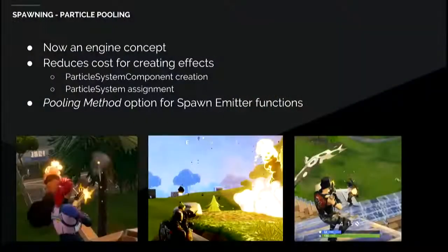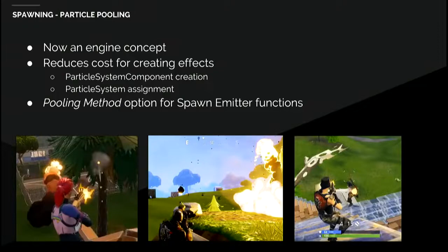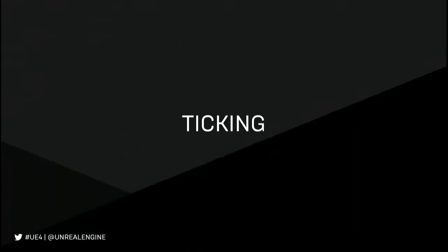One thing in particular that we did was add the concept of particle pooling. One of the most common things we spawn in a game with lots of combat is particle effects — whether it's hit markers on someone, particles from things being spawned, or explosions. By pooling them, we basically keep sets of components around that we can use again and again without paying the allocation cost and setup cost. Our engine spawn emitter function now has a pooling method that you pass in to specify how you want to control these things in their lifetime.